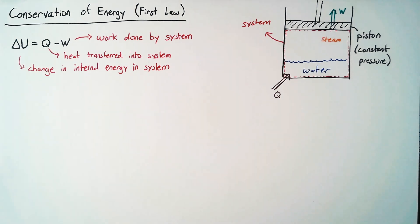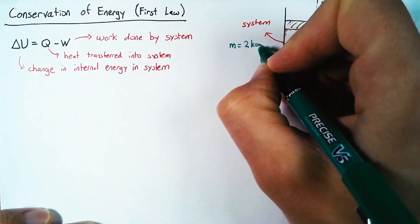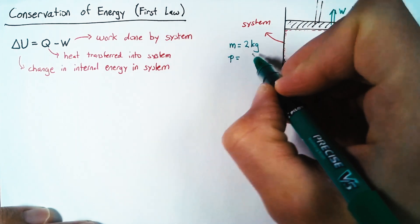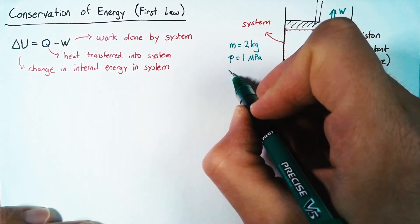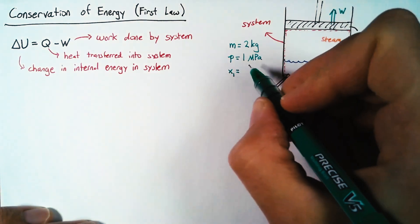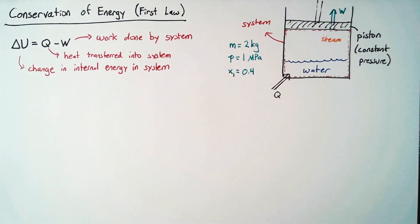So this system is going to be undergoing what we call constant pressure expansion because the volume is getting larger. Now, let's define just a few more things about our system as we start off. So the total amounts of mass in our system is going to be 2 kilograms. That includes both the water and the steam. The pressure is going to be 1 megapascal. And our quality, or the percentage of steam by mass, is going to be 40%.